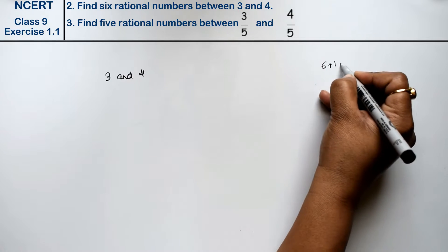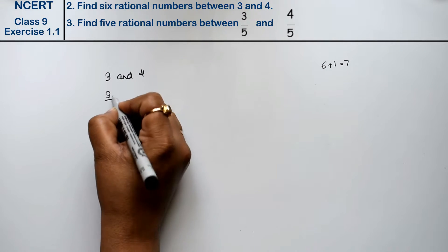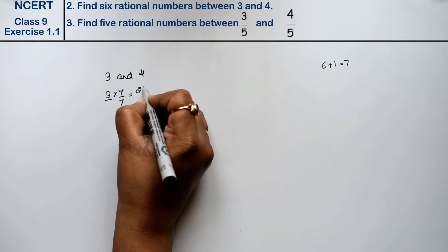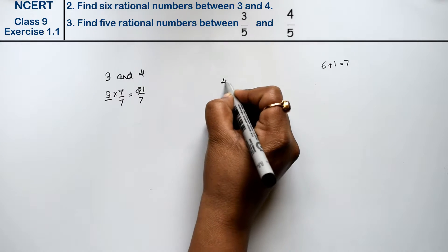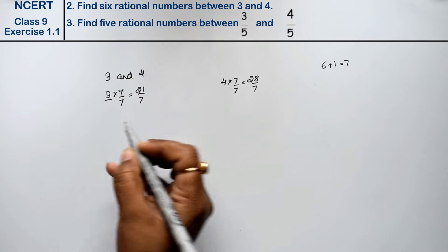If we want 6, we will do plus 1. 7 is done, so we will multiply and divide. 3 into 7 upon 7 equals to 21 upon 7. 4 into 7 upon 7, so it is 28 upon 7.